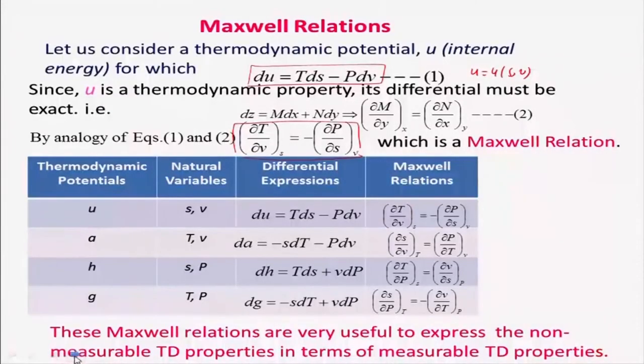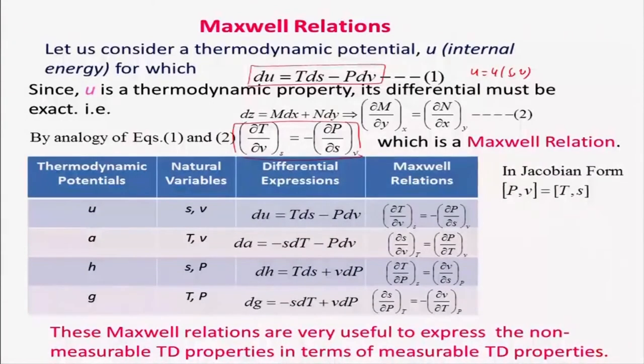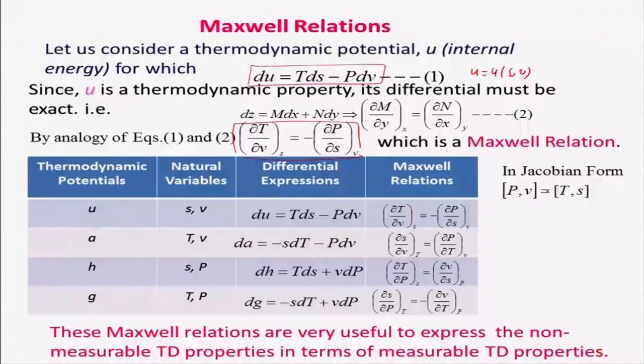I want to write these in Jacobian form. That is essentially: Jacobian(P,V) = Jacobian(T,S). This is a very simple and easy-to-remember expression. The Jacobian form is very simple, and all four Maxwell relations can be converted into one equation.